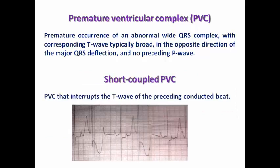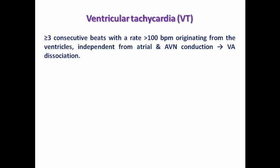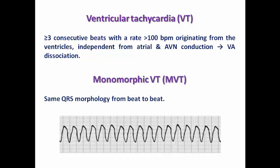The short-coupled PVC is a PVC that interrupts the T wave of the preceding conducted beat, which is a vulnerable zone that may result in R-on-T phenomenon, predisposing to Torsades de Pointes. VT itself is defined as three or more consecutive ventricular ectopic beats at a rate above 100 beats per minute, originating from the ventricles independent from atrio-nodal conduction, resulting in VA dissociation.